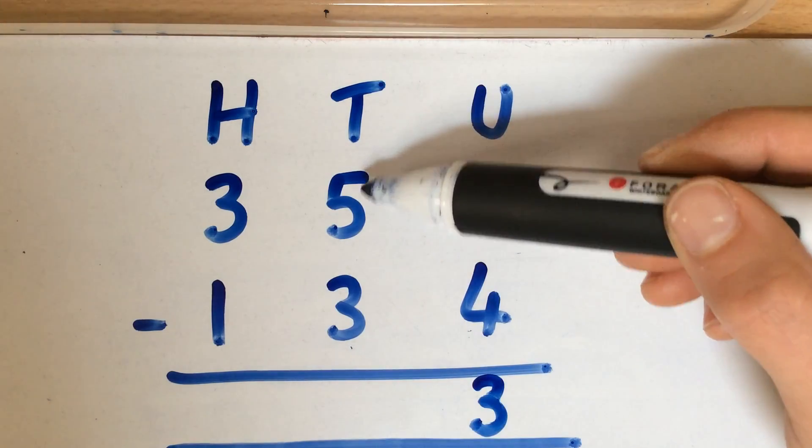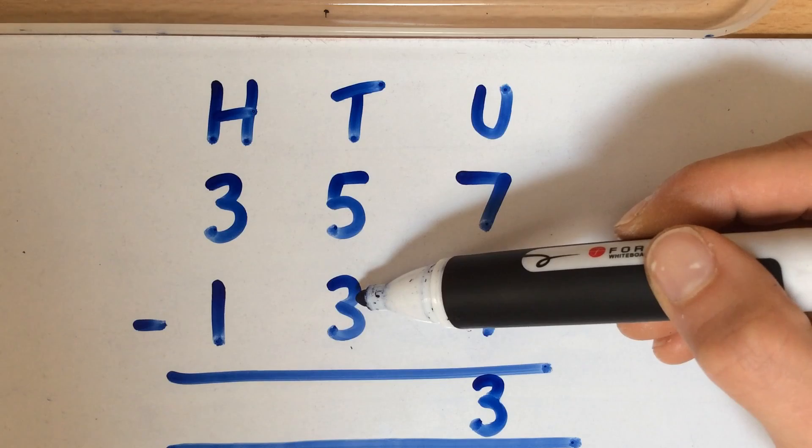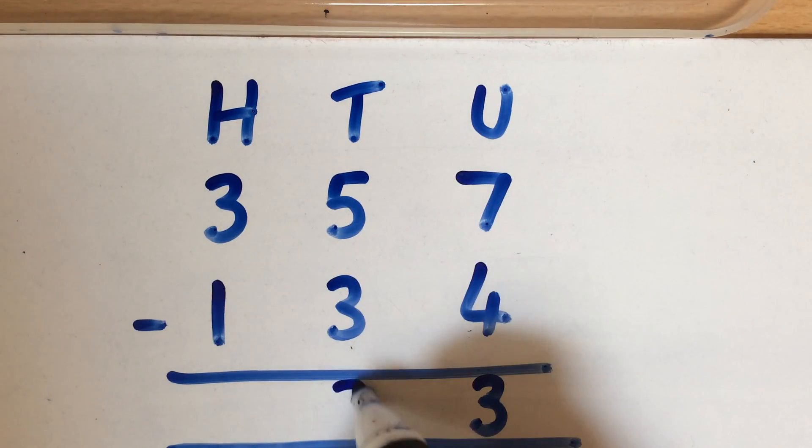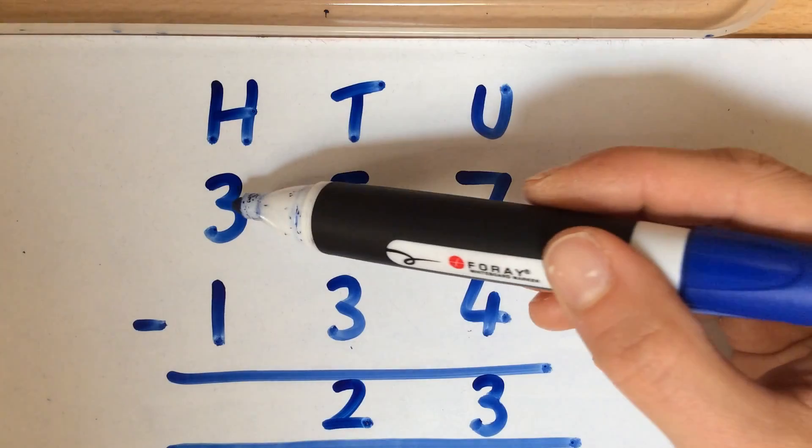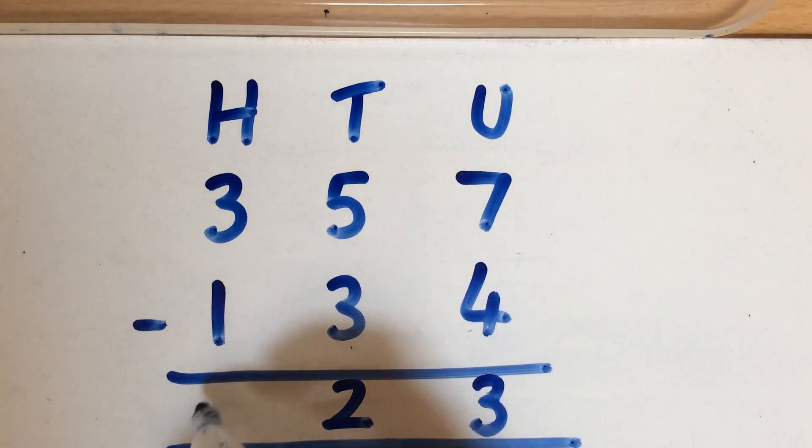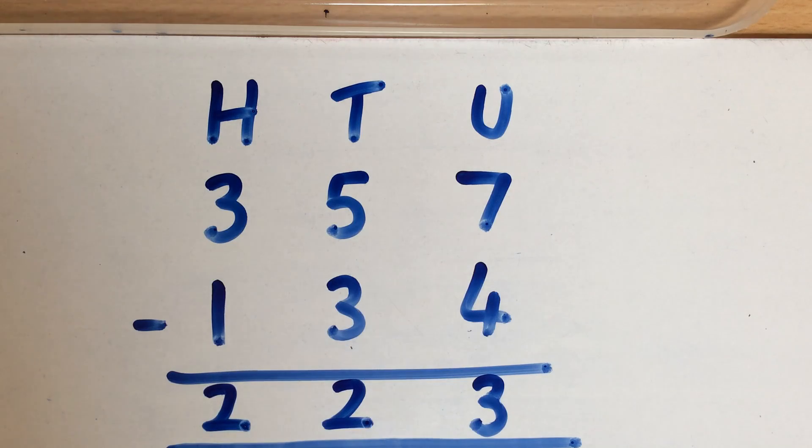Here you've got 5 lots of 10, or 50, take away 3 lots of 10, or 30. So you can do 5 take away 3, which gives you 2 lots of 10. And then 3 lots of 100 take away 1 lot of 100, which gives you 200. That's probably one of the easiest ones that you would come across.